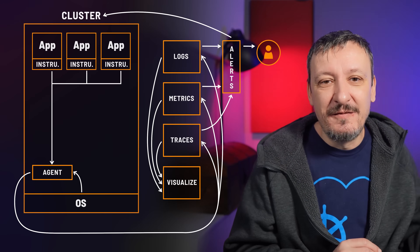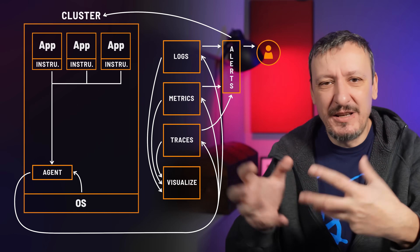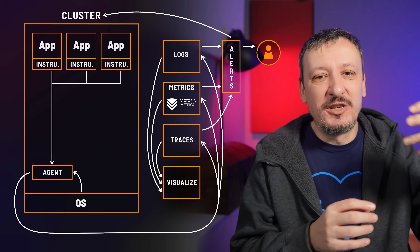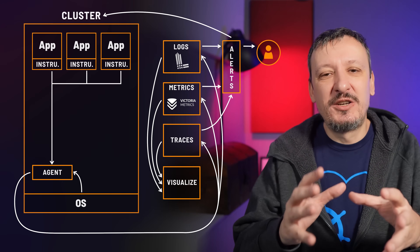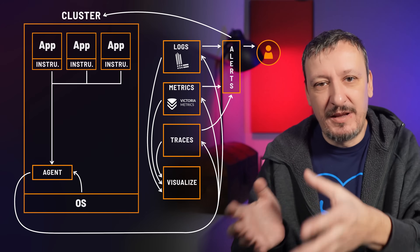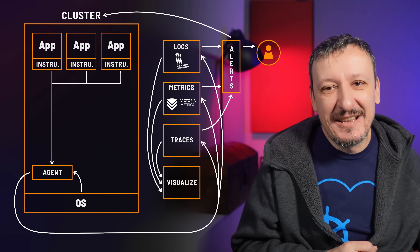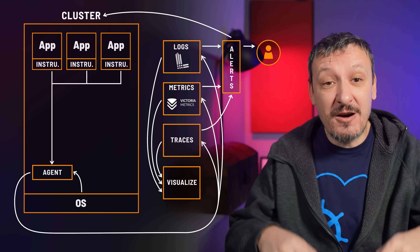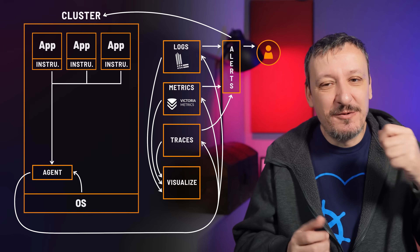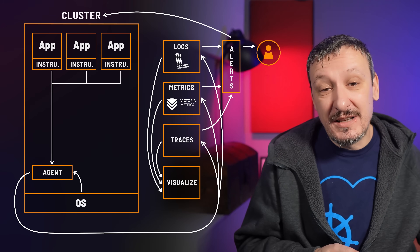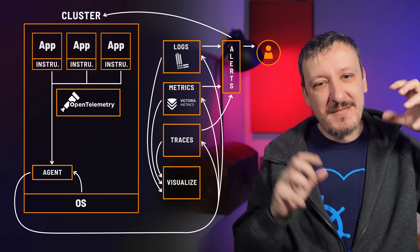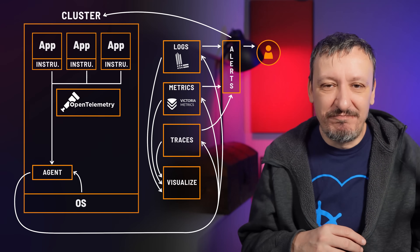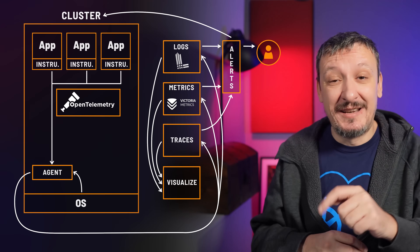While all those other tasks are important, instrumentation requires the biggest investment. If we make a wrong choice with tooling we can relatively easily change it — we can switch from Prometheus to Victoria Metrics, or change logging from Elasticsearch to Loki. Those changes require time and effort, but that investment is almost negligible compared to rewriting instrumentation of our code. That's why it's important to make the right choice before we start, and that's where OpenTelemetry comes in.